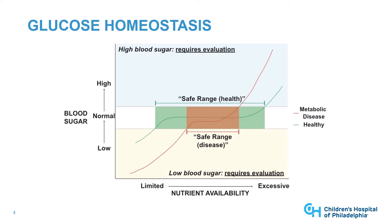One important problem in many individuals with mitochondrial disorders is problems of glucose homeostasis. Individuals who are healthy without mitochondrial disease can tolerate a wide range of nutrient availability — maintaining safe blood sugars whether nutrients are limited or in excess. In contrast, individuals with mitochondrial disorders are more fragile, with a narrower range of acceptable nutrient availability. If there isn't enough energy available, they can be more prone to low blood sugars; if there is excess nutrition, higher blood sugars or diabetes can be a problem.